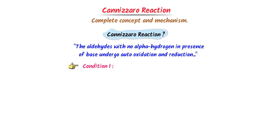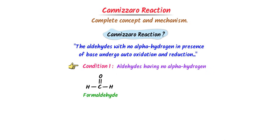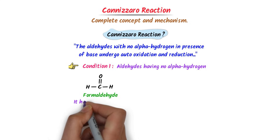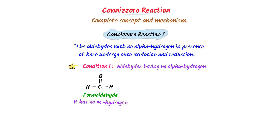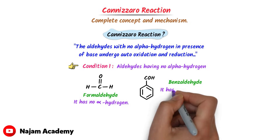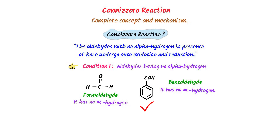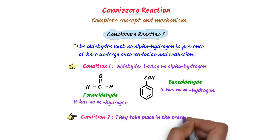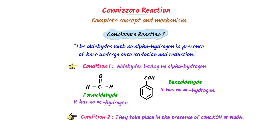There is one important condition for the Cannizzaro reaction. Only those aldehydes follow Cannizzaro reaction which have no alpha hydrogen. For example, consider formaldehyde — we can see that it has no alpha hydrogen, so formaldehyde follows Cannizzaro reaction. Secondly, consider benzaldehyde — it also has no alpha hydrogen, so it follows Cannizzaro reaction. The second condition is that it takes place in the presence of concentrated potassium hydroxide or concentrated sodium hydroxide.